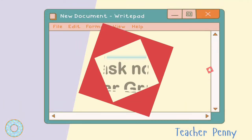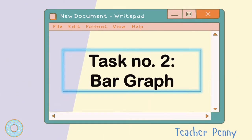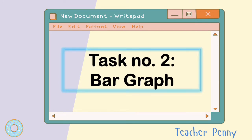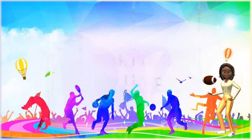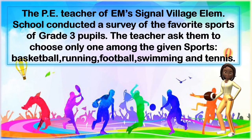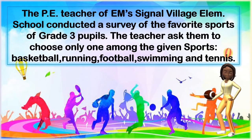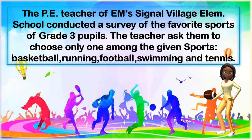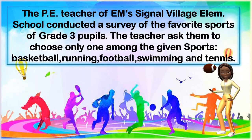Good job! Now we have task number 2, featuring the bar graph. Let's read the selection. The PE teacher of EM Signal Village Elementary School conducted a survey of the favorite sports of grade 3 pupils. The teacher asked them to choose only one among the given sports: basketball, running, football, swimming, and tennis.